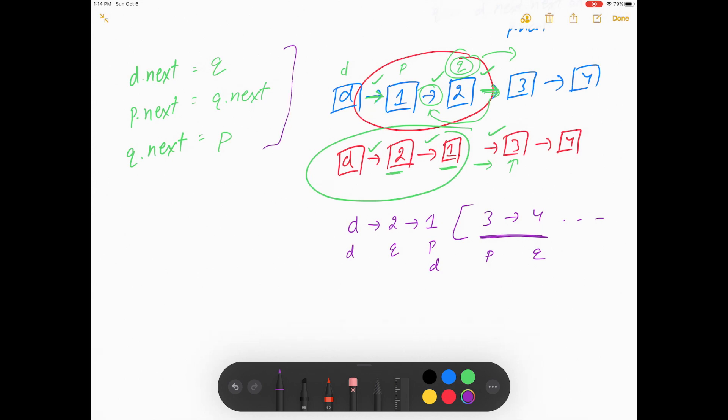So at the end, what we are going to do? We will make d equal to p. So here now our d will be at this position, this will going to be our dummy node. And now again we will do this operation in this 3 and 4. So this is the only gist of the problem.